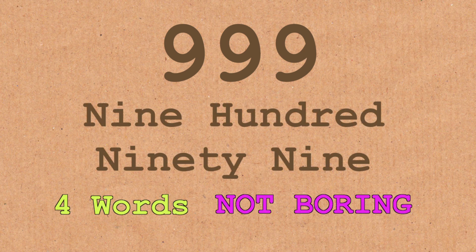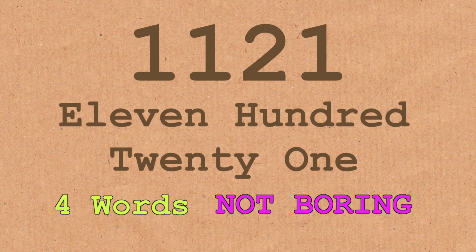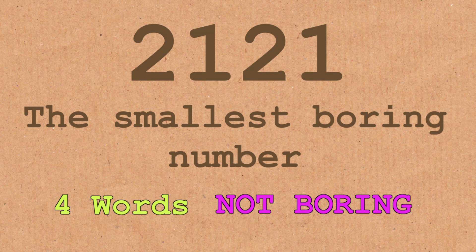Thinking about this got me thinking more: is there such a thing as a boring number? I found a definition online — a boring number is a number that you can't express in less than six English words. For example, 999 is four words, so that's not boring. I think the first one you come across is probably 1,121 — you need six words for that. But then, what if somebody calls it differently and gets under? I think 2,121 is pretty safe — nobody is calling it that. So I think 2,121 is the smallest boring number. But I've just called it the smallest boring number — that's four words. So I've fallen foul of my own criteria again.